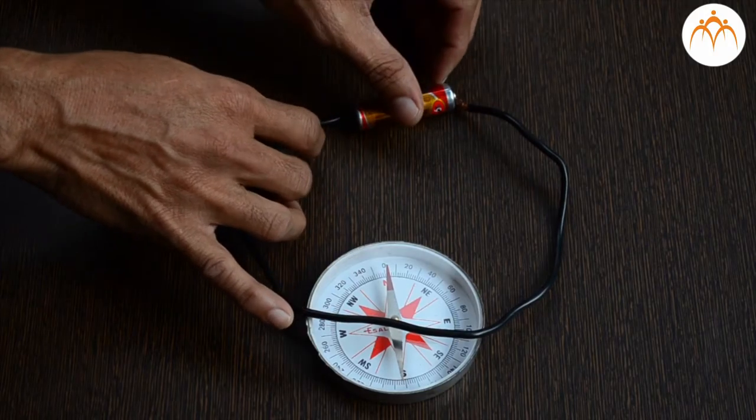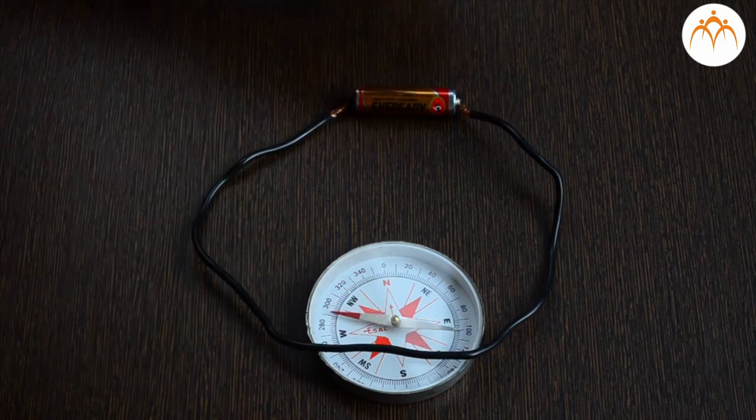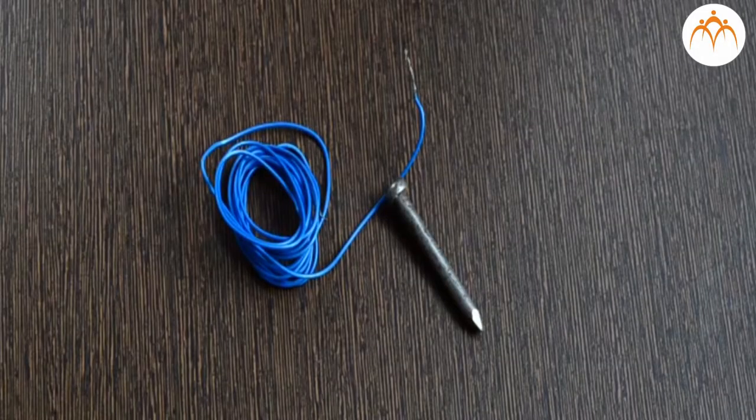Now that we know current flowing through a conductor generates a magnetic field, we can build a small electromagnet with a nail and electric wire.